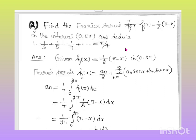Previously in Fourier series problem number 1, I solved the Fourier series for f(x) = x². Now we solve f(x) = ½(π - x) on [0, 2π]. First write the Fourier series formula: f(x) = a₀/2 + Σ(aₙ cos nx + bₙ sin nx). We need to find a₀, aₙ, and bₙ since this is a full range Fourier series.